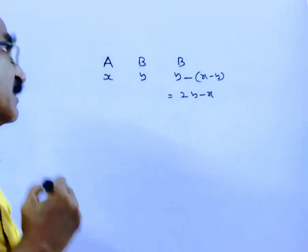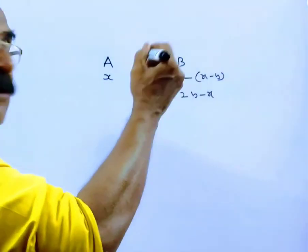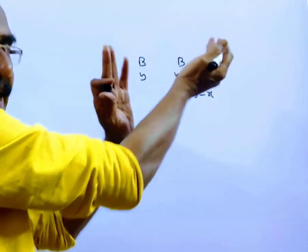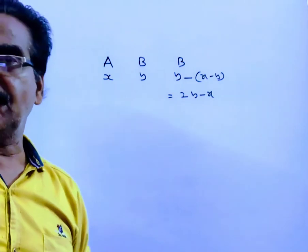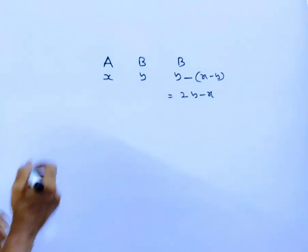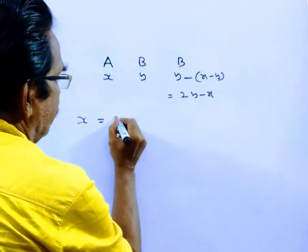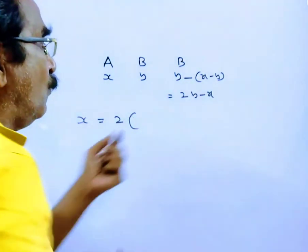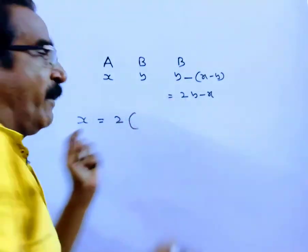So when A was at the age of B, then B would be 2Y minus X. Now, according to the statement given by A, A said 'I am twice as old as you were.'